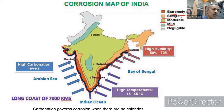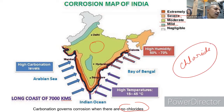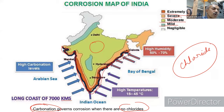Even in places far from the coast, corrosion can occur near chemical plants or acid-producing industries. Along the coast, chloride is the main culprit causing corrosion along with humidity. In the interior, most corrosion is due to carbonation from carbon dioxide released by heavy traffic in cities. Chennai falls under the extreme corrosion zone, and chloride-induced corrosion is widely seen in this area.